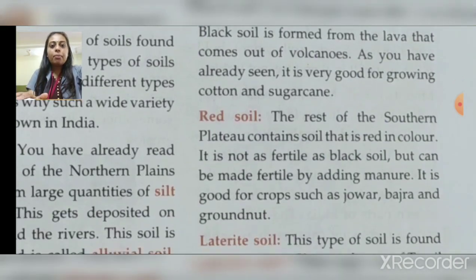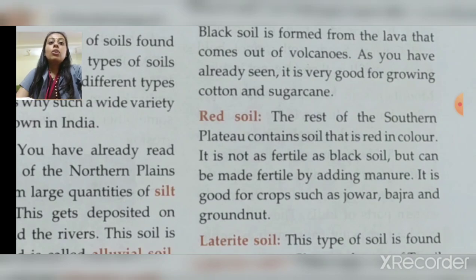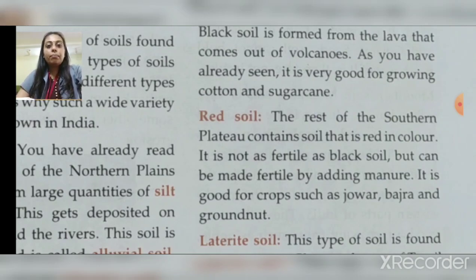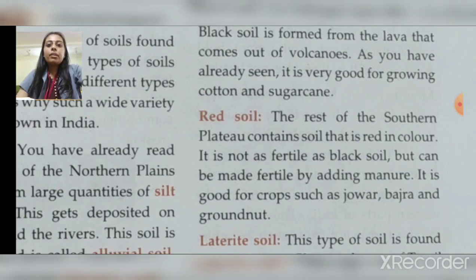The third type of soil is red soil, found in the rest of the southern plateau. It is not as fertile as black soil, but can be made fertile by adding manure. Red soil is good for crops such as jowar, bajra, and groundnut. Sugarcane is also grown in some red soil areas.